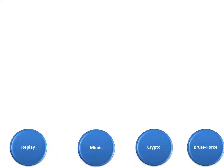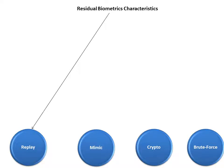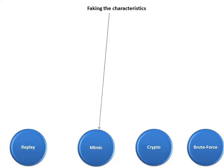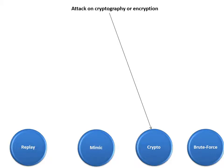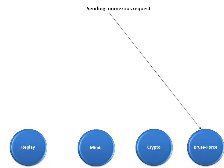These are the four attacks for biometrics. A residual biometric characteristic is used in a replay attack. Faking a biometric characteristic corresponds to a mimic attack. An attack on cryptography or encryption corresponds to a cryptographic attack. Sending numerous requests to a biometric device corresponds to a brute force attack.